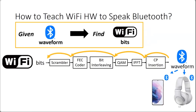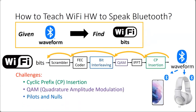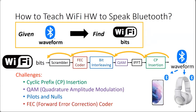Working backwards through the Wi-Fi transmitter pipeline, BlueFi identifies four major challenges: the insertion of cyclic prefix (CP), the QAM modulation process, the insertion of pilots and nulls, and the forward error correction (FEC) coder.